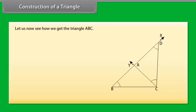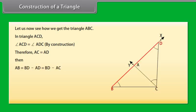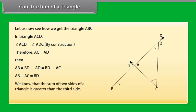Let us now see how we get triangle ABC. In triangle ACD, angle ACD equals angle ADC by construction. Therefore, AC equals AD, then AB equals BD minus AD which equals BD minus AC, or AB plus AC equals BD. We know that the sum of two sides of a triangle is greater than the third side. Therefore, ABC is a triangle.